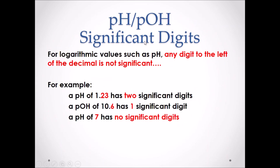pH and pOH significant digits. For logarithmic values such as pH, any digit to the left of the decimal is not significant. For example, a pH of 1.23 only has 2 significant digits. Every number to the right of the decimal counts, while every value to the left does not. Another example: a pOH of 10.6 only has 1 significant digit, which is the 6 to the right of the decimal. And finally, a pH of 7 has no significant digits because there are no values to the right of the decimal.